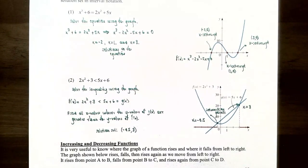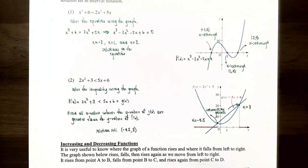This is a good place to stop. We've covered how to find the domain and range of a function from its graph and how to solve equations and inequalities graphically. If you have any questions about the examples or the homework for this section, please let me know. In the next video we'll talk about increasing and decreasing intervals and local max and local minimum on a graph.